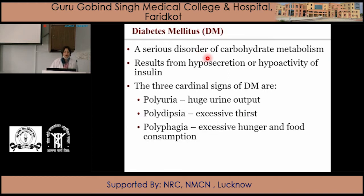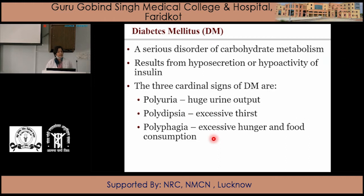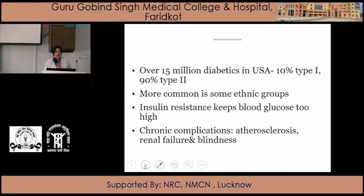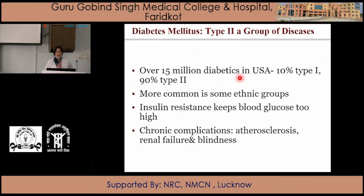Diabetes is a serious disorder of carbohydrate metabolism resulting from hyposecretion or hypoactivity of insulin. The three cardinal signs of diabetes are polyuria (huge urine output), polydipsia (excessive thirst), and polyphagia (excessive hunger and food consumption). The most common distribution is 10% Type 1 and 90% Type 2 cases. Chronic complications include atherosclerosis, renal failure, and blindness.